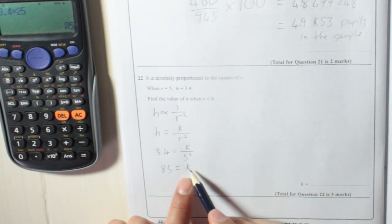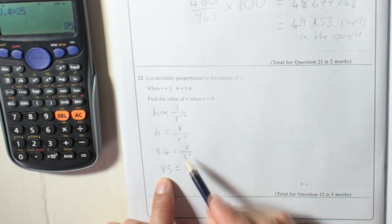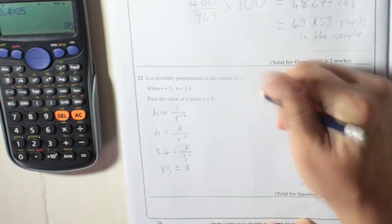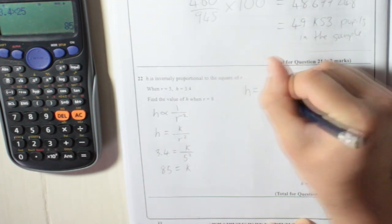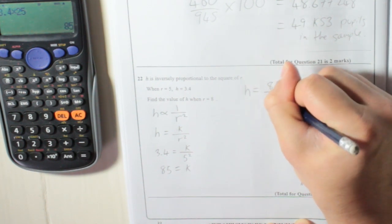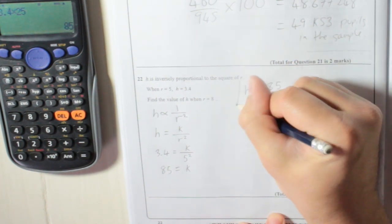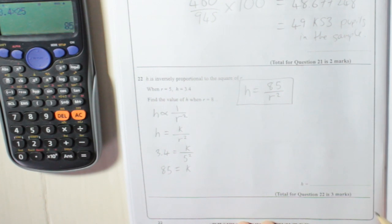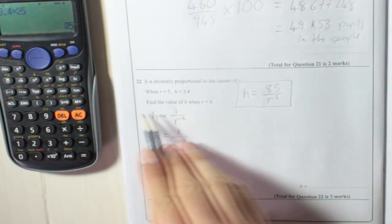So now, I'm going to put that, because 85 is k, I'm going to change k there for 85. h equals 85 over r squared. And this is the formula that's actually going to allow us to work out the question.